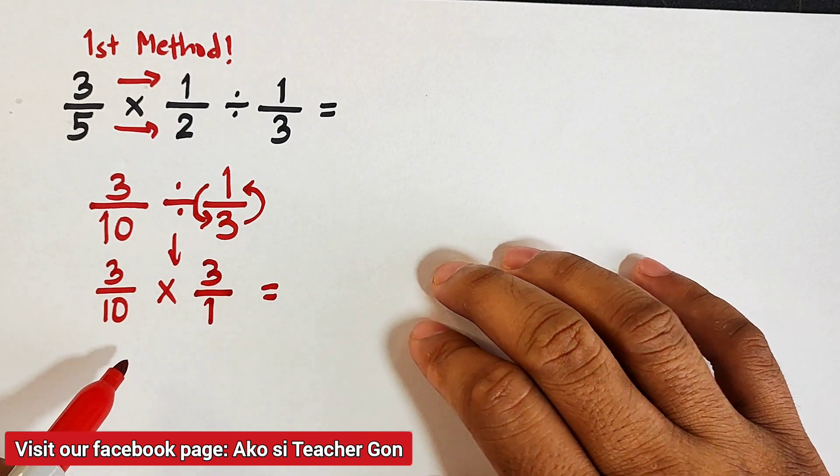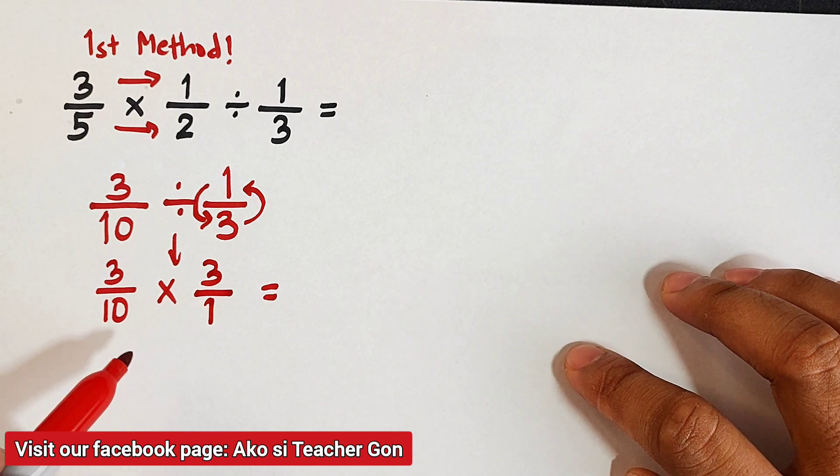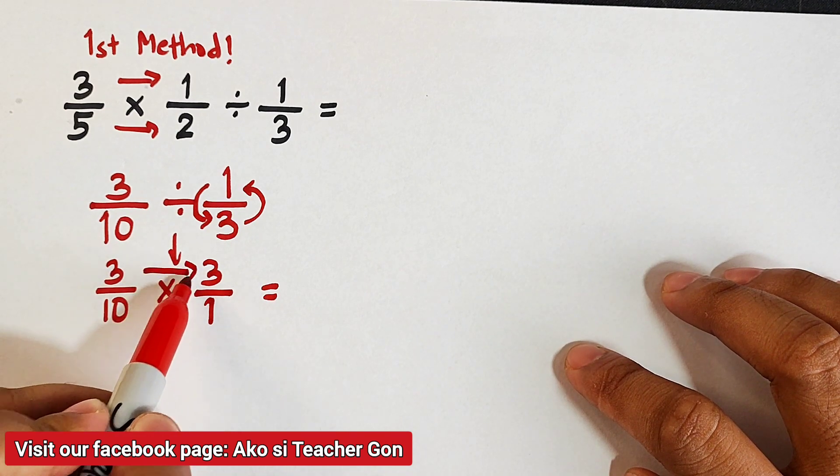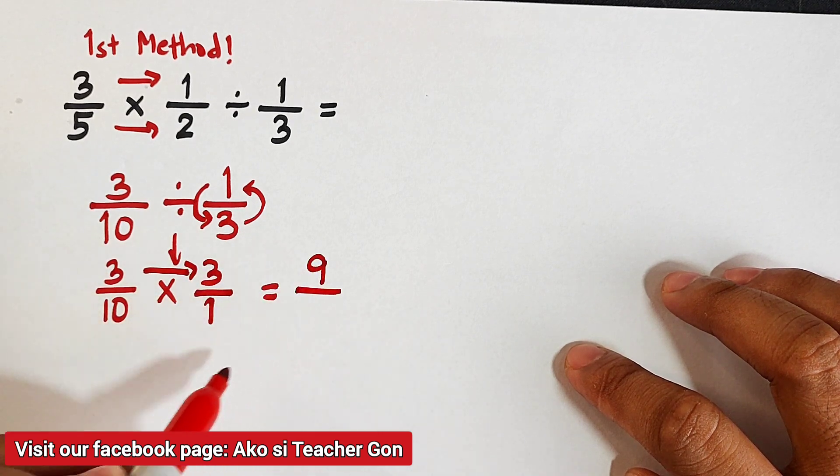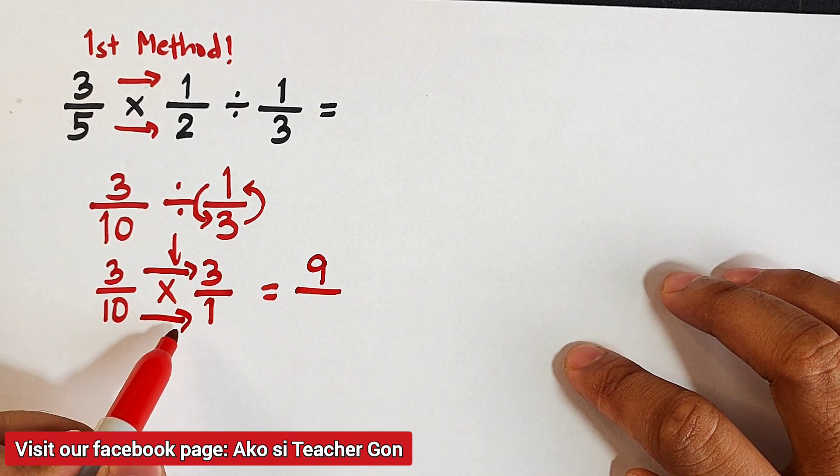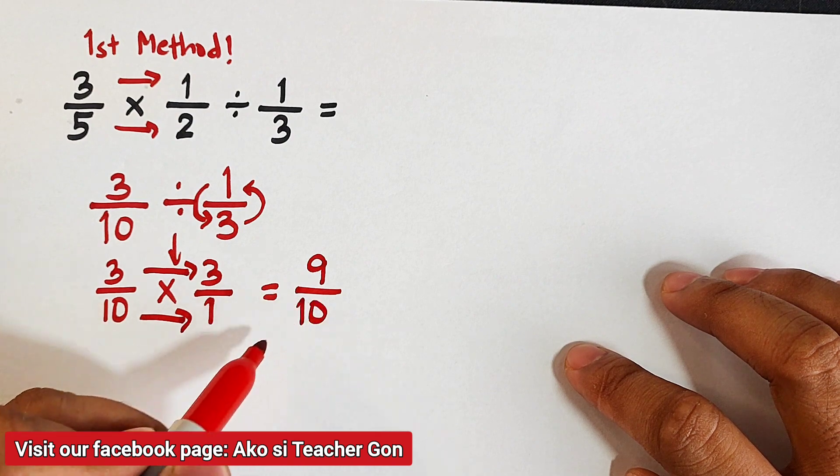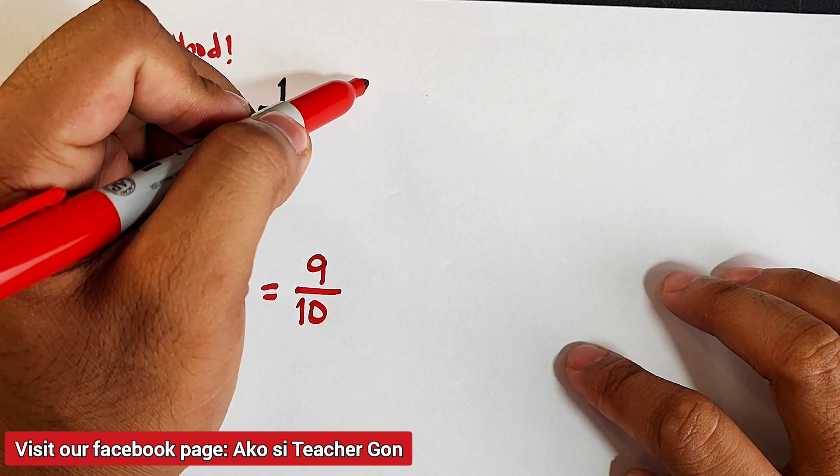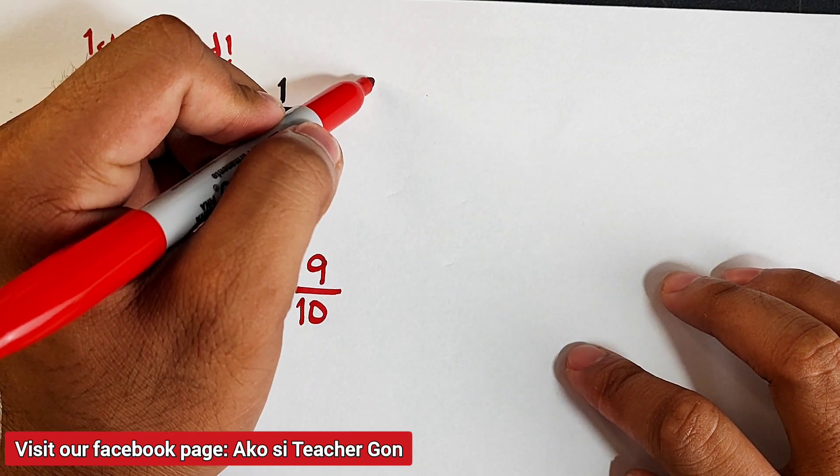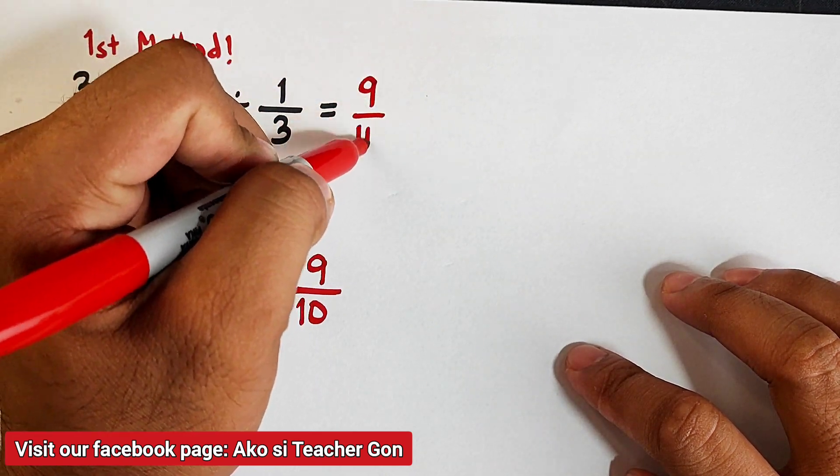And again, as I have told you earlier, multiply the numerators, 3 times 3, which is 9, over 10 times 1, which is equal to 10. Meaning, the simplified form of this fraction is 9 over 10.